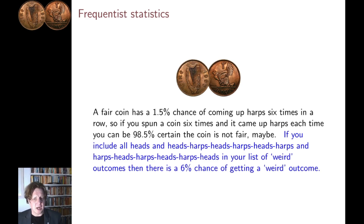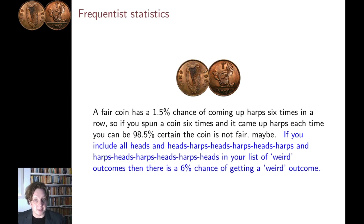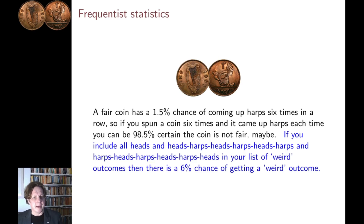Six heads in a row would have been pretty weird. Heads, harps, heads, harps, heads, harps might have looked weird, as would harps, heads, harps, heads, harps, heads. But once you have a list of four possible weird outcomes, then the chance of getting a weird outcome is 6%, in which case by the previous logic, the gambler is only 94% certain that the coin is unfair. And 94% is beneath the traditional threshold for making a decision based on frequentist statistics.